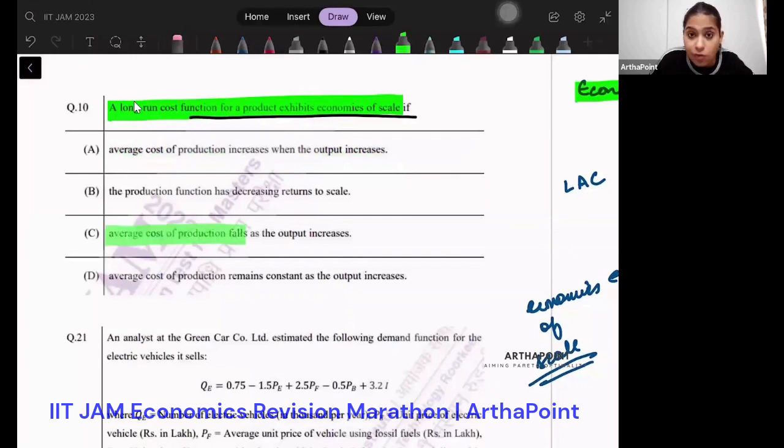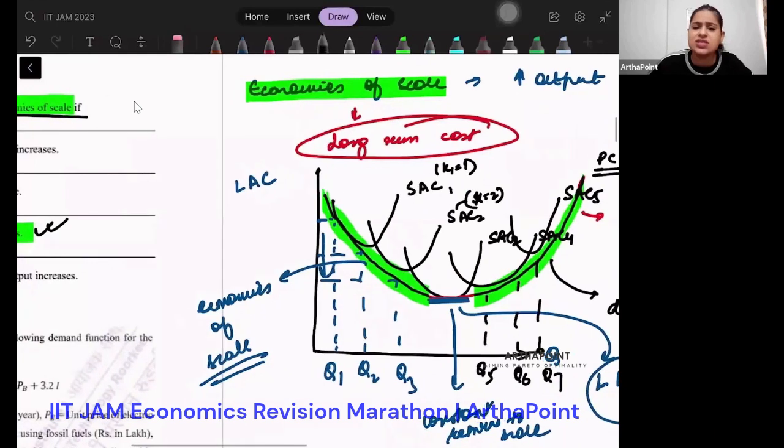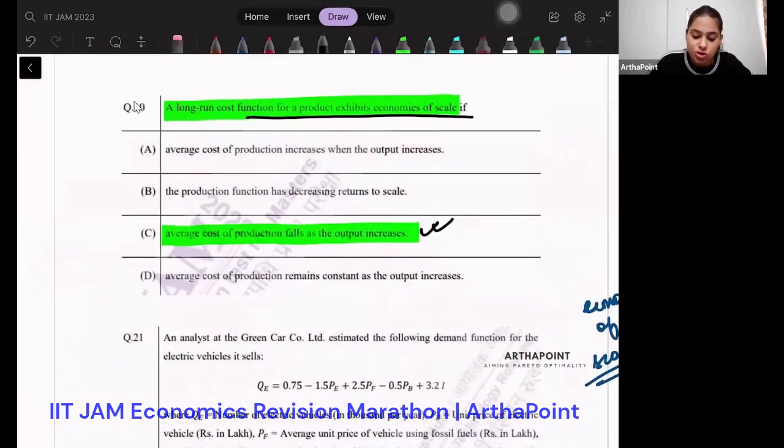So average cost of production falls as output increases. Yes, this is the correct answer. I should be in this space. This is where I should be. So the correct answer to this question is C, average cost of production falls as output increases.